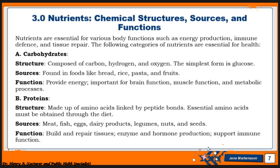Number two is protein. In terms of structure, proteins are made up of amino acids and they have peptide bonds that are linked together. Amino acids must be obtained through the diet, not from drugs — they must be obtained through natural means, which is diet. The sources for protein include meat, fish, eggs, dairy products such as cow milk, legumes, groundnuts, and seeds.